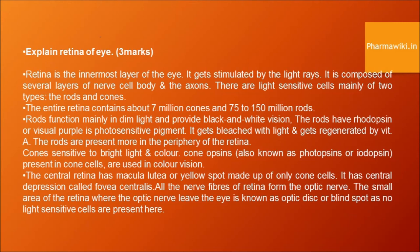Cones are sensitive to bright light and color. Cone pigments present in cone cells are also used in color vision. The central retina has the macula lutea or yellow spot, made up of only cone cells. It has a central depression called the fovea centralis. All nerve fibers of the retina form the optic nerve. The small area of the retina where the optic nerve leaves the eye is known as the optic disc or blind spot, as no light-sensitive cells are present here.